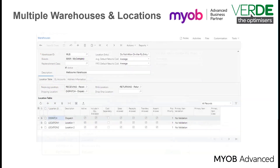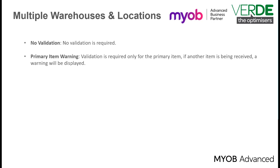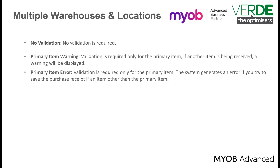On the Warehouse Location tab you will have the following options. Cost Separately: you can choose whether costs will be calculated separately from the system level. Pick Priority: this is the priority of this location when items are picked, where one is the highest and zero means there is no pick priority. Primary Item Validation: if you want to validate the primary item you can choose from No Validation, Primary Item Warning, Primary Item Error, Primary Item Class Warning, or Primary Item Class Error.